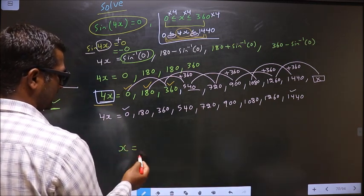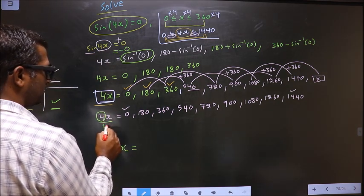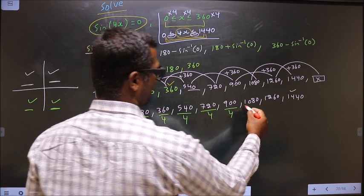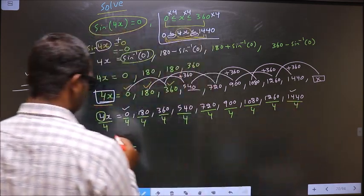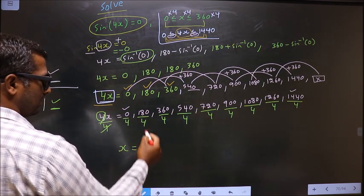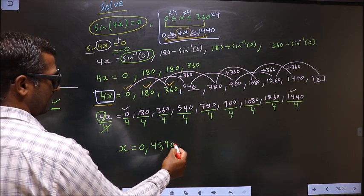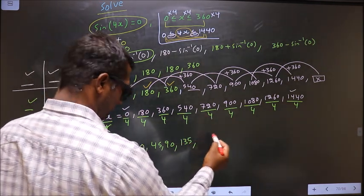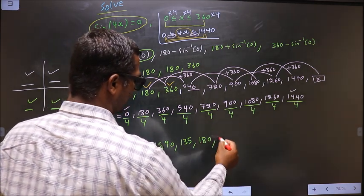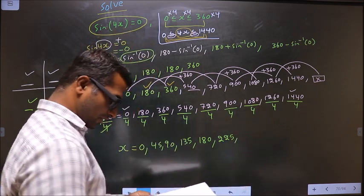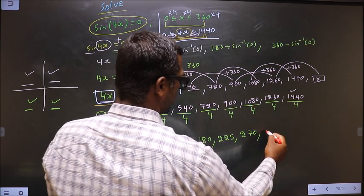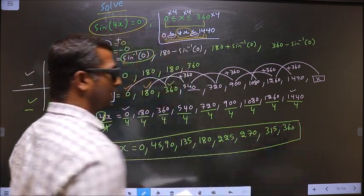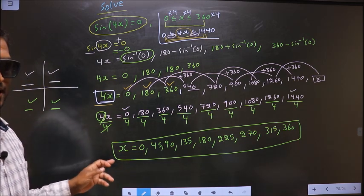To get the values of x, divide each 4x value by 4. This gives: 0 ÷ 4 = 0; 180 ÷ 4 = 45; 360 ÷ 4 = 90; 540 ÷ 4 = 135; 720 ÷ 4 = 180; 900 ÷ 4 = 225; 1080 ÷ 4 = 270; 1260 ÷ 4 = 315; 1440 ÷ 4 = 360. So x = 0°, 45°, 90°, 135°, 180°, 225°, 270°, 315°, 360°. These are the final answers.